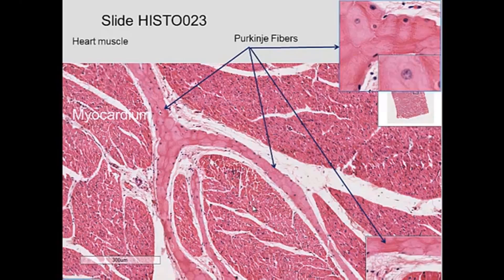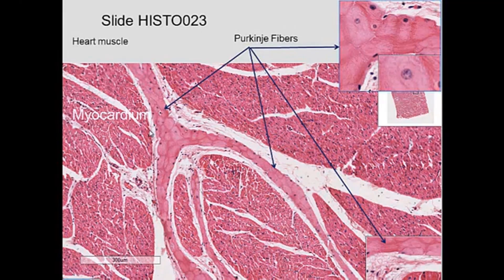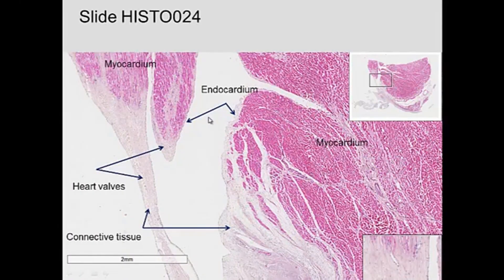Coming down between the ventricles of the heart are the Purkinje fibers. Purkinje fibers are modified cardiac muscle cells that carry electrical impulses down to the tip of the ventricles and then back up the sides, allowing both the right and left ventricles to contract at the same time. The Purkinje fibers originate from the SA node, which organizes the contraction of the heart. One of these cells has a nucleus and is a large cell with a lot of glycogen, which has been removed in preparation, making it appear lighter.